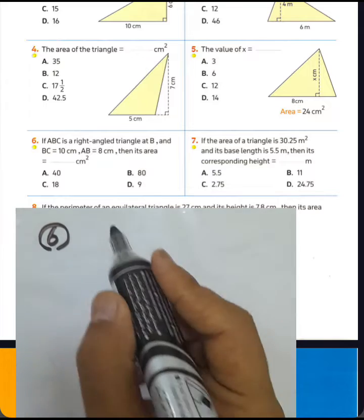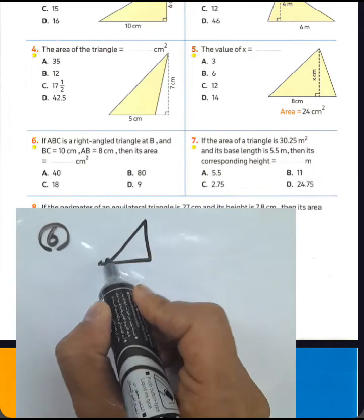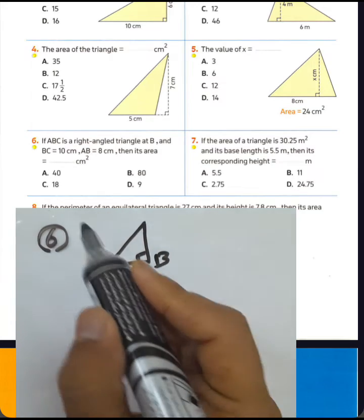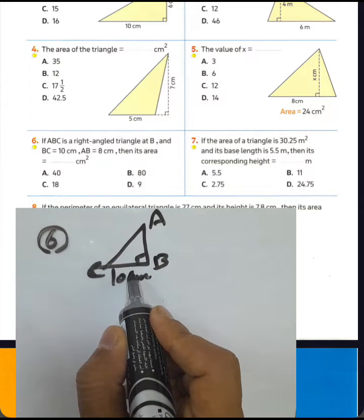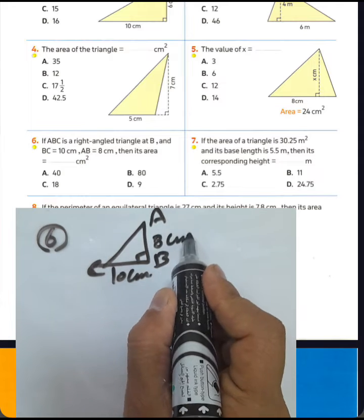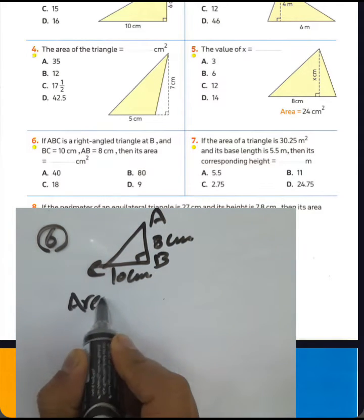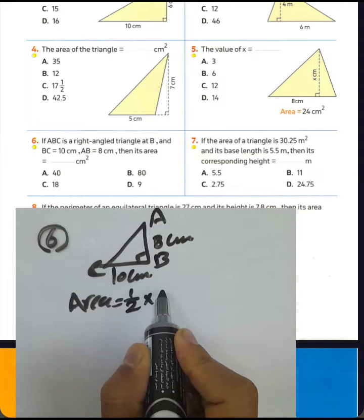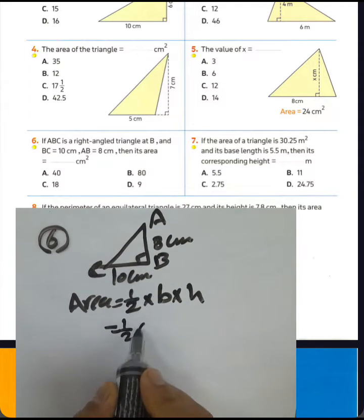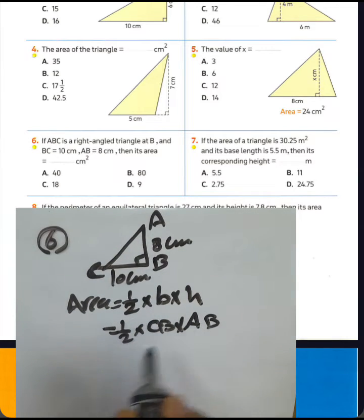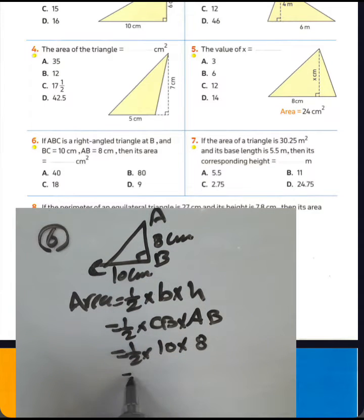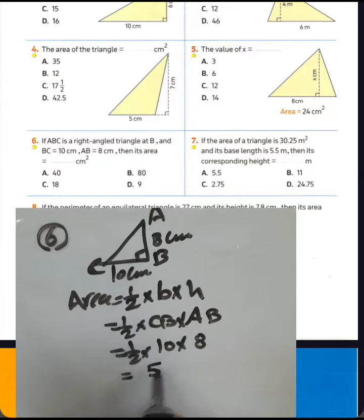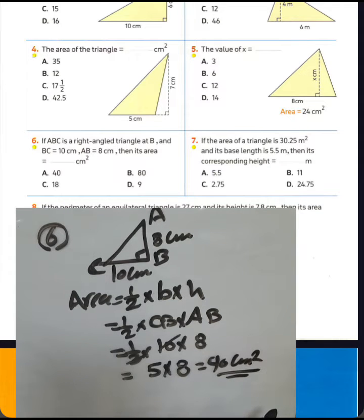Question number six: if ABC is a right-angle triangle at B, and BC was 10 centimeters and AB was 8 centimeters, find the area. The area equals half times base times height — the base is BC equals 10 cm and the height is AB equals 8 cm. Half of 10 is 5, times 8 equals 40 square centimeters. The answer is letter E.